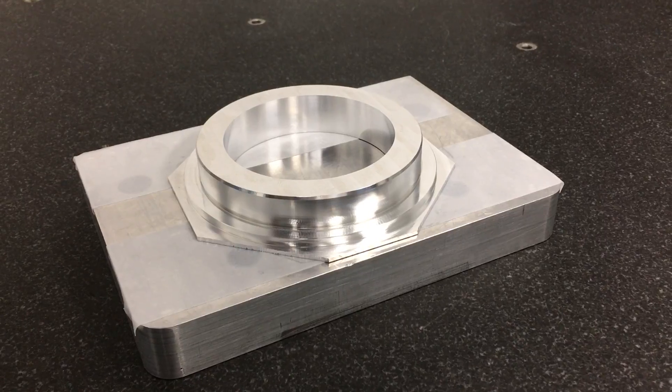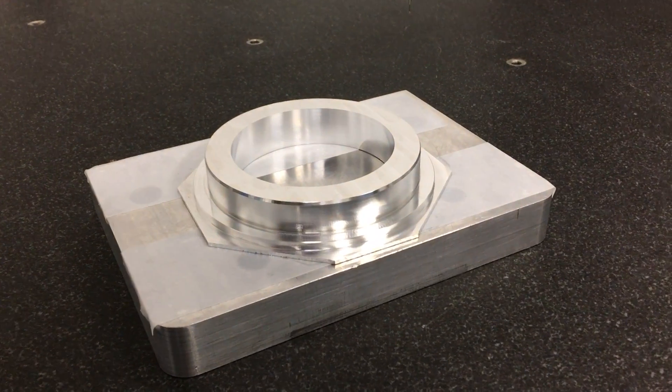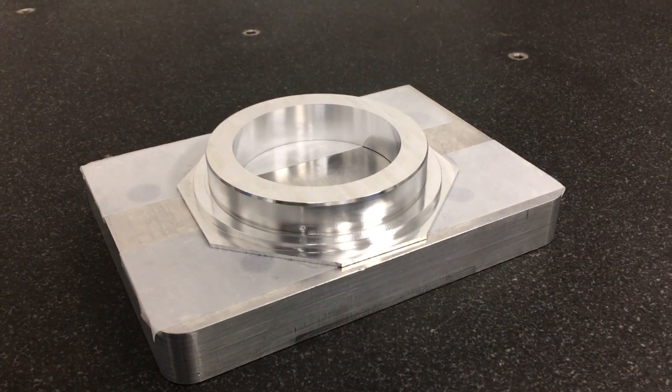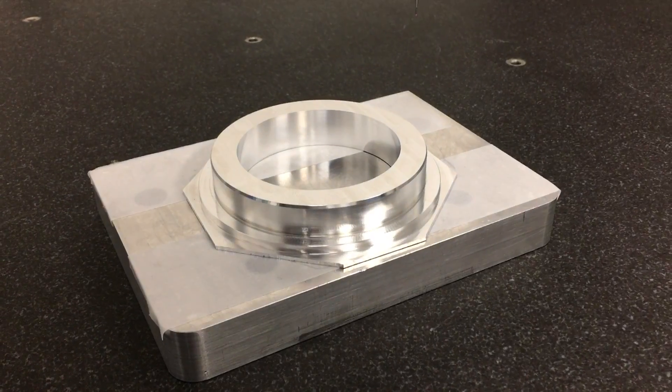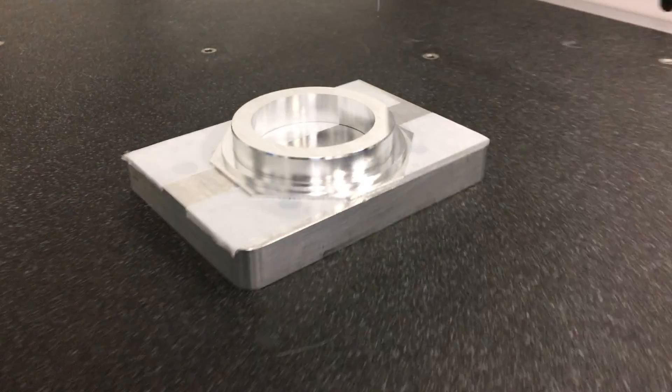So what we're going to do here, we're in our Brown and Sharp CMM machine, and we are going to check the roundness of this ring because that really tells us how good the CNC machine is by seeing how round it can actually cut a part. So we're going to check this ring right now.